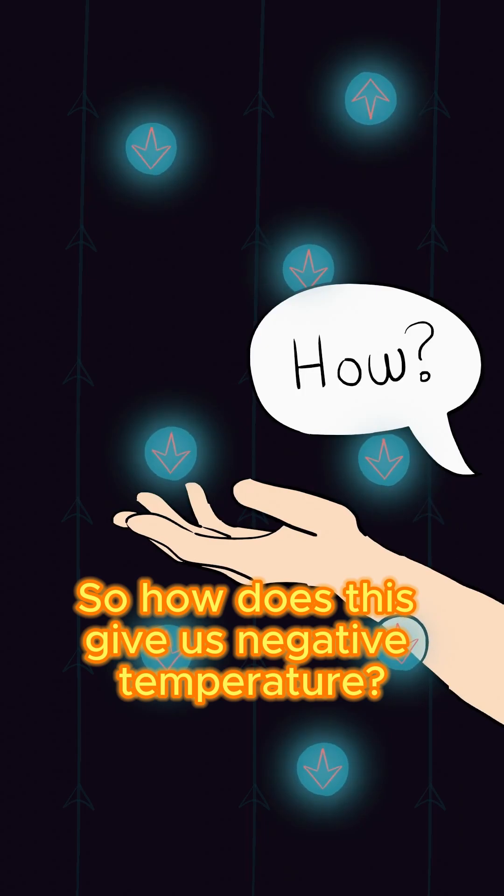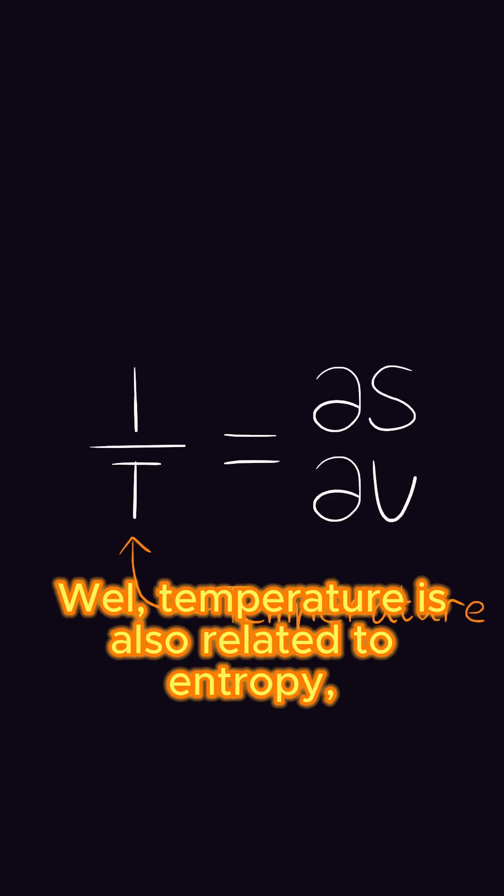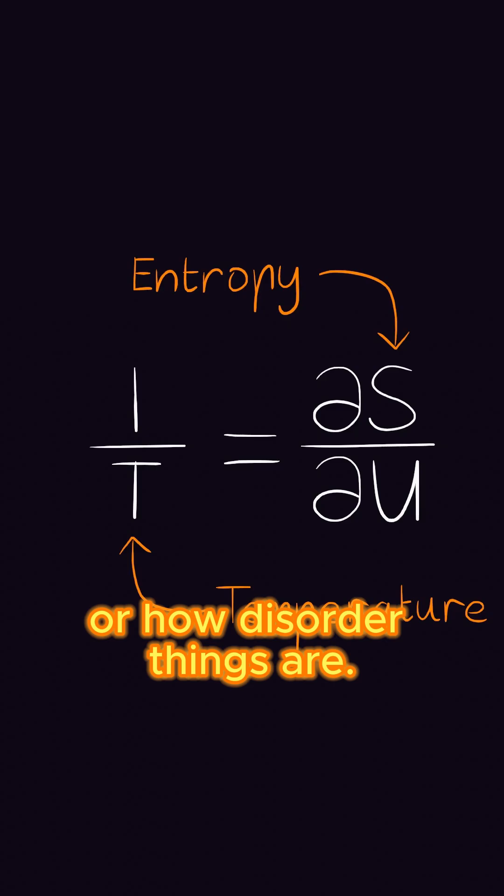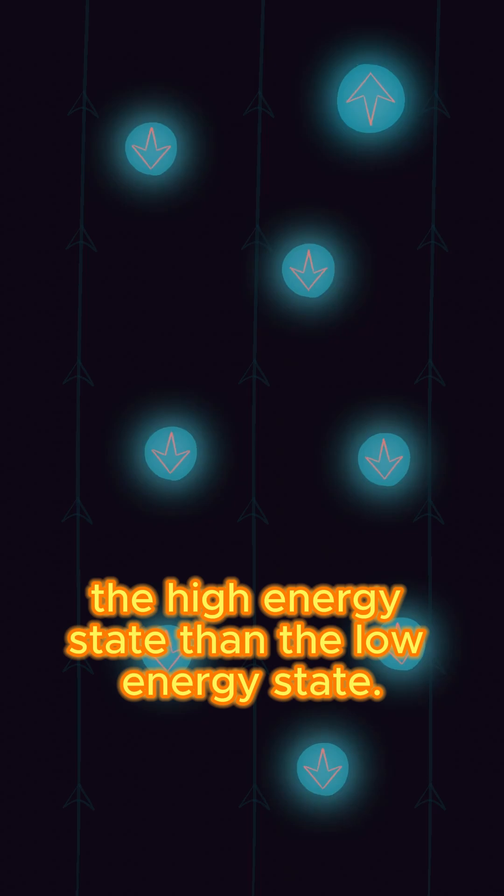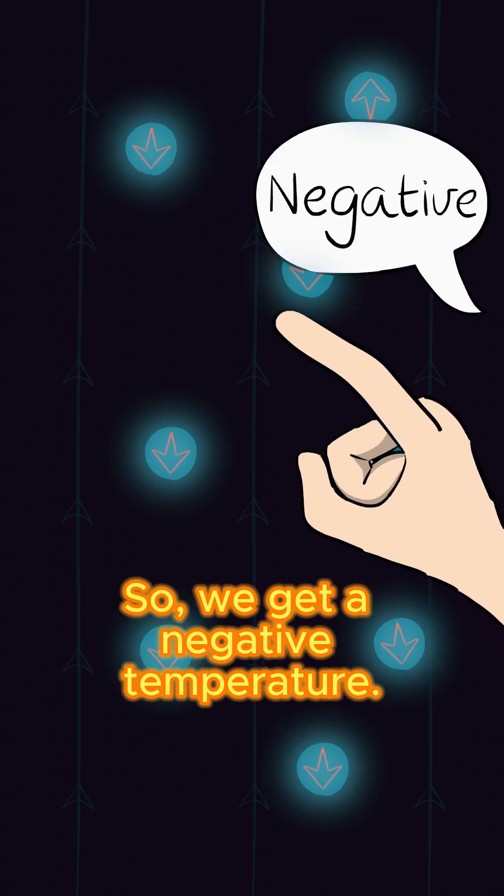So how does this give us negative temperature? Well, temperature is also related to entropy or how disordered things are. These magnets are neatly ordered with more magnets in the high energy state than the low energy state. So we get a negative temperature.